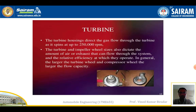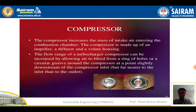The main function of the turbine in a turbocharger: the turbine housing directs gas flow through the turbine and it spins at about 250,000 RPM. The turbine and impeller size determines the amount of air or exhaust that can flow through the system and its relative efficiency. A larger turbine wheel and compressor will increase the flow capacity. The compressor increases the mass of intake air entering the combustion chamber; it is made up of an impeller, diffuser, and a volute housing.